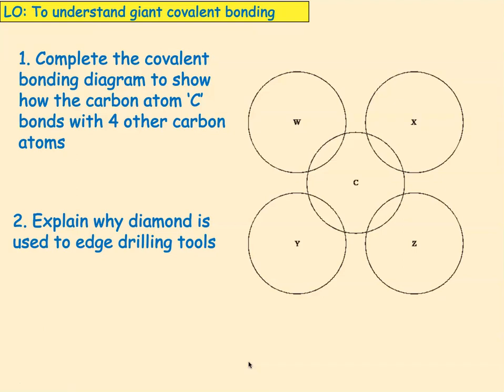The covalent bonding in that diagram — remembering that carbon has four electrons in its outer shell — means you're going to form four covalent bonds like that. We haven't shown the other three electrons on each of W, X, Y, and Z. Those three would then go on and form covalent bonds with three other carbon atoms. That shows you how all of the electrons are involved in the covalent bonds.